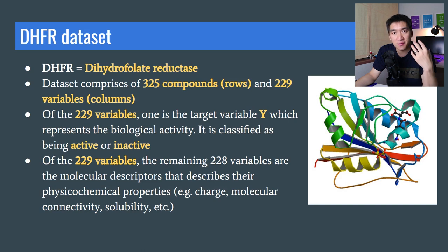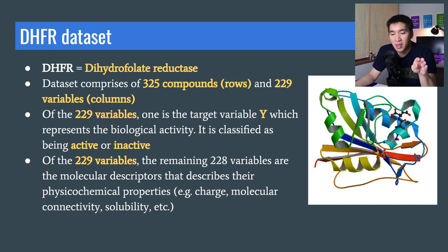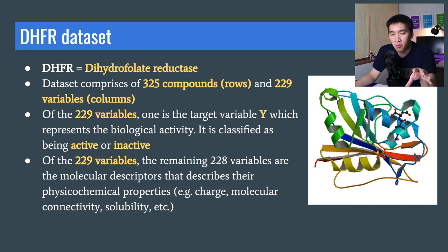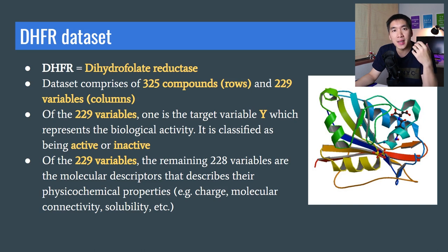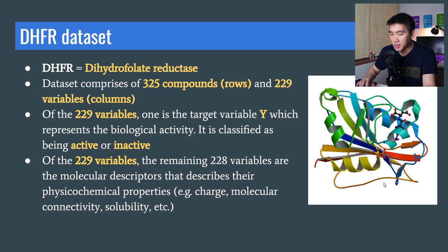Today we're not going to focus on classification, but on how to handle missing data. Of the 229 variables, the remaining 228 are called molecular descriptors — they represent the physicochemical properties that describe the unique characteristics of a drug molecule in terms of charge, molecular connectivity, solubility, and so on. On the right you can see the protein structure of dihydrofolate reductase.